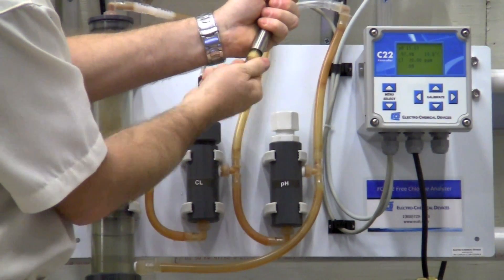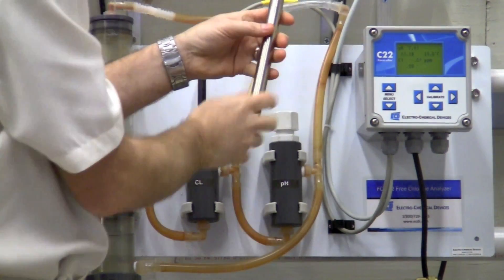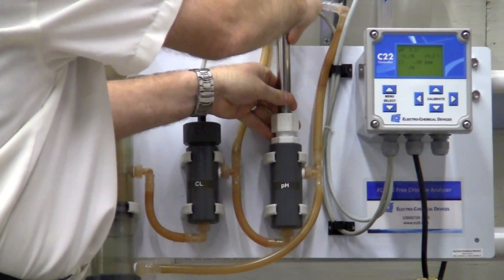Screw the replacement electrode into the sensor housing, perform a two-point calibration as we talked about earlier, and then install this back into the flow cell.